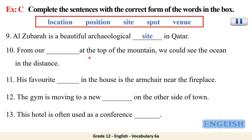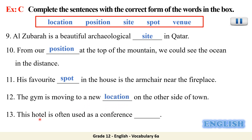'From our ___ at the top of the mountain, we could see the ocean in the distance' — from our position. 'His favourite ___ in the house is the armchair near the fireplace' — his favourite spot. 'The gym is moving to a new ___' — location. 'The hotel is often used as a conference ___' — a place where events take place — a conference venue.